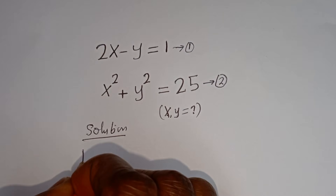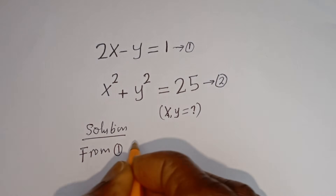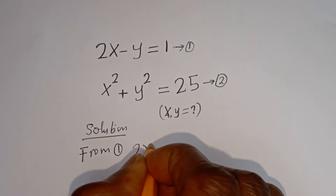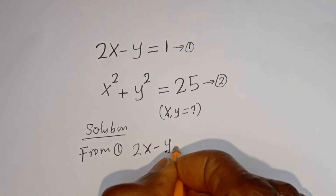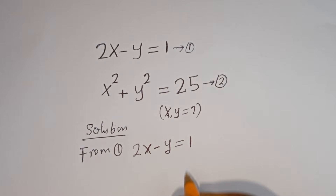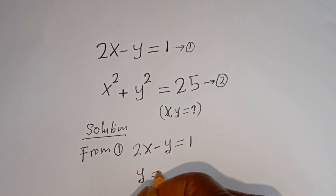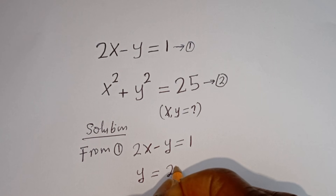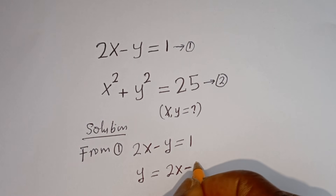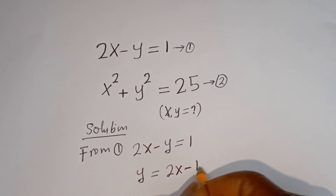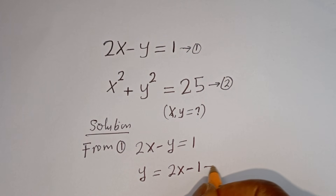From equation 1, we have 2x minus y is equal to 1, so y is equal to 2x minus 1. Let's call this equation 3.